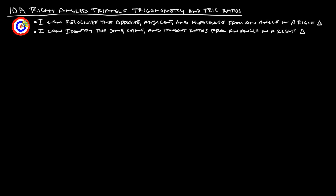So at the end of this, you should be able to say: I can recognize opposite, adjacent, and hypotenuse from an angle in a right triangle, and also I can identify sine, cosine, and tangent ratios from an angle in a right triangle.